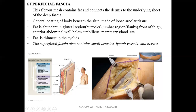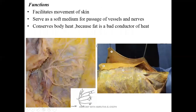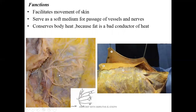Fat is usually deposited in the superficial fascia, especially in regions like the buttocks, lumbar regions, anterior abdominal wall, and mammary gland. In some areas like the eyelid, fat is very thin. Not only fat, but small arteries, veins, lymphatic vessels, and nerves also run in the superficial fascia, and are called superficial structures. This picture shows a nerve seen in the superficial fascia — the yellow-colored areas are superficial fascia, and these are terminal branches of the facial nerve. The superficial fascia serves as a soft medium for the passage of nerves and vessels, and also conserves body heat because fat is a poor conductor of heat.